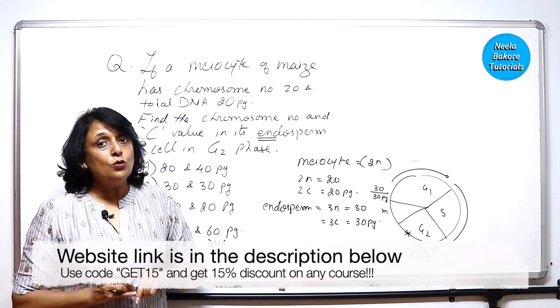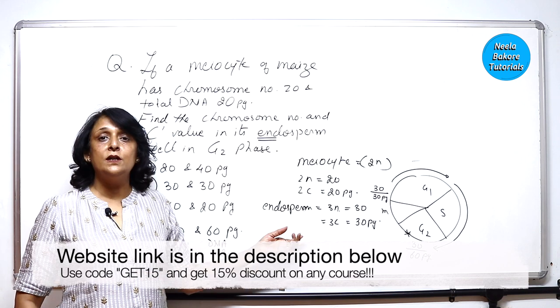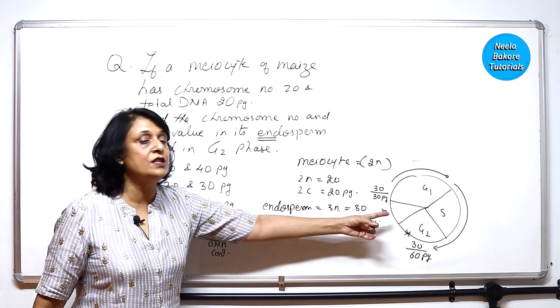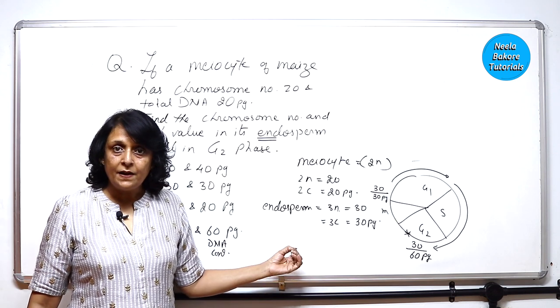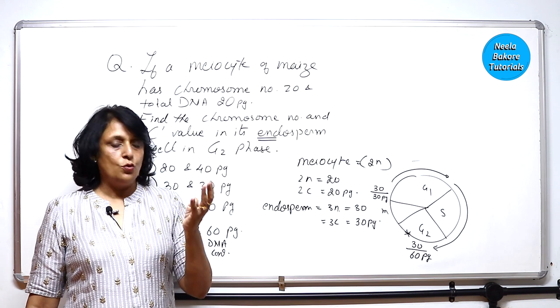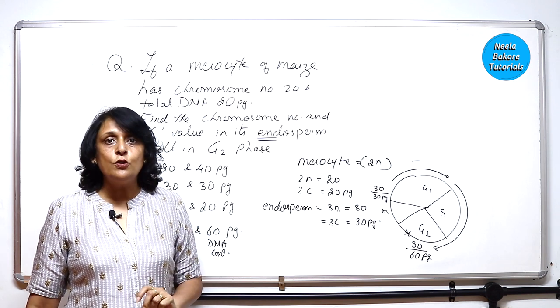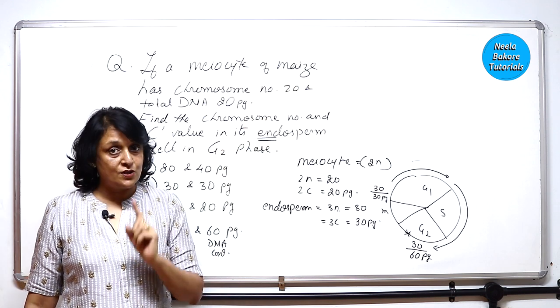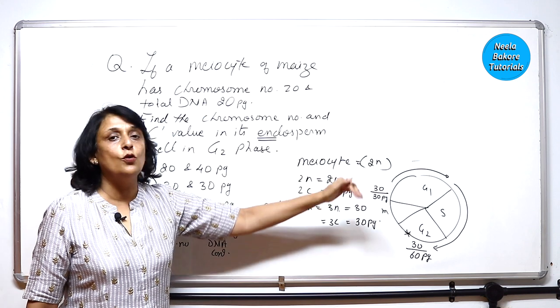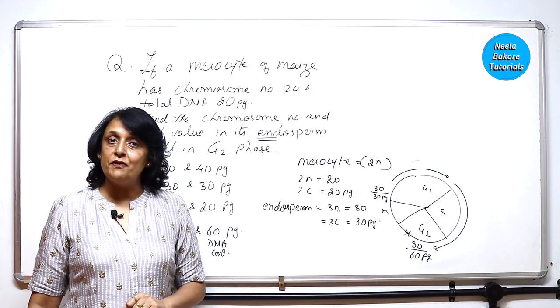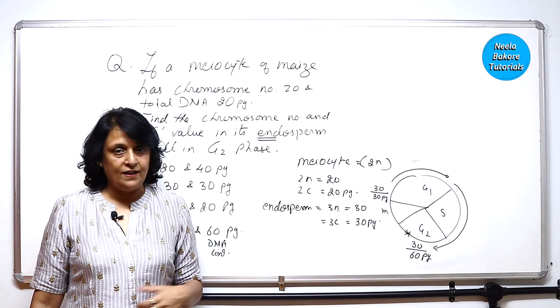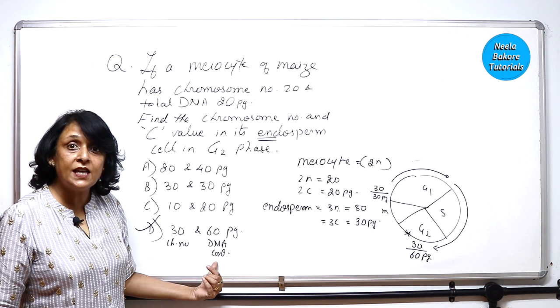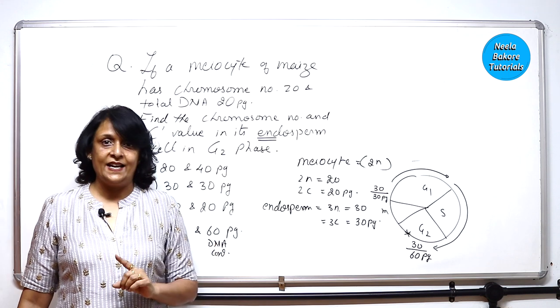So here, how the chromosome numbers do not change but the DNA content doubles in S phase. So after that, double DNA content will be seen. So do we know the ploidy of endosperm? Do we know that this is an angiosperm and in angiosperms the endosperm is triploid, and how the chromosome number and DNA content changes in different phases of cell cycle? So correct answer is 30, that is the number of chromosomes, and 60 picograms, that is DNA content.